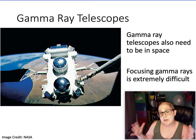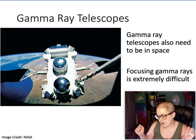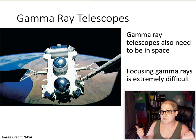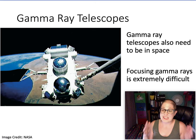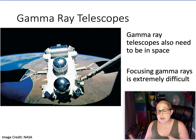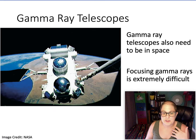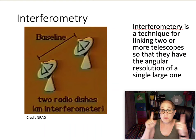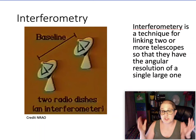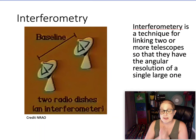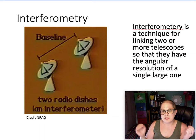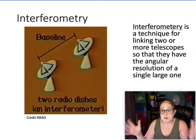A bigger telescope gets you more light and better resolution. Resolution also depends on wavelength — the shorter the wavelength, the better the resolution. For long wavelengths like radio, your resolution isn't very good no matter how big you build your telescope. Radio astronomers have figured out a way around that with a technique called interferometry, where you link two or more telescopes together so they have the angular resolution of a single large telescope. You can put telescopes on different sides of the Earth and if they're pointing at the same point in the sky, you can get really good angular resolution — much better than any telescope you can build in one piece.